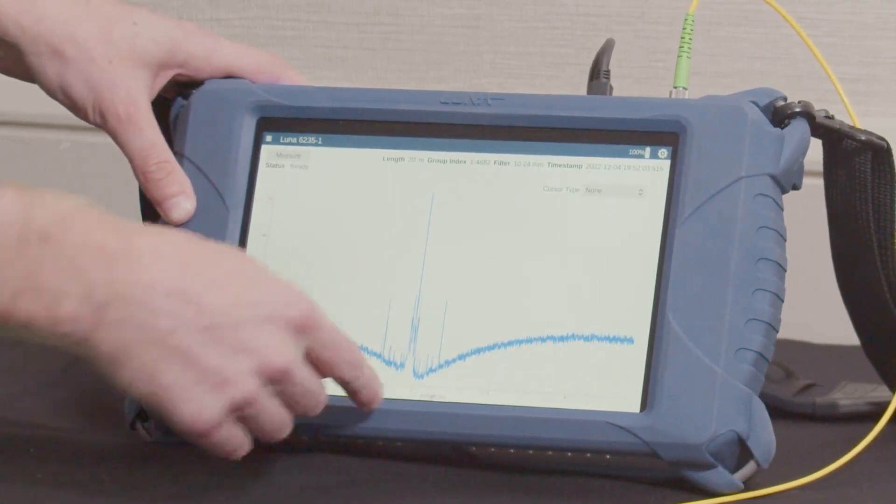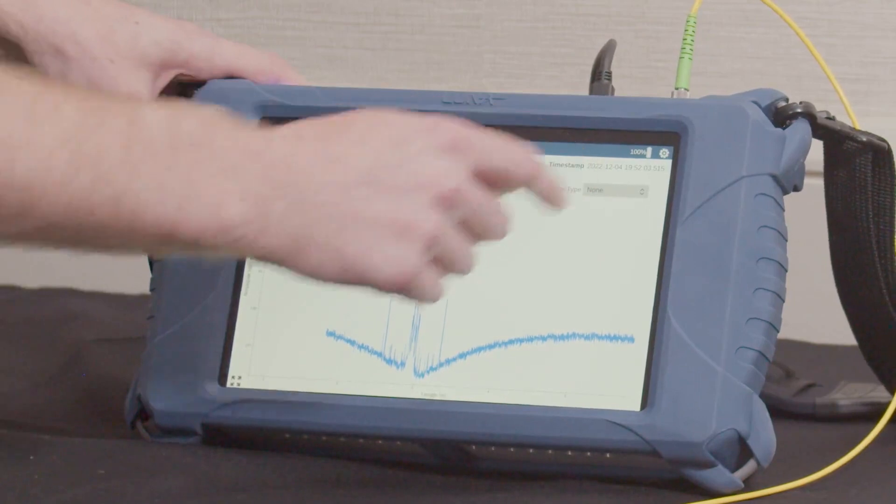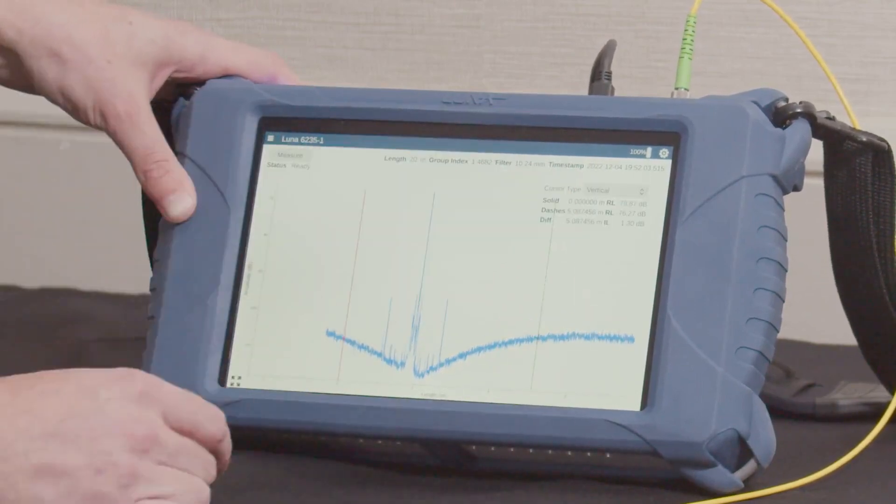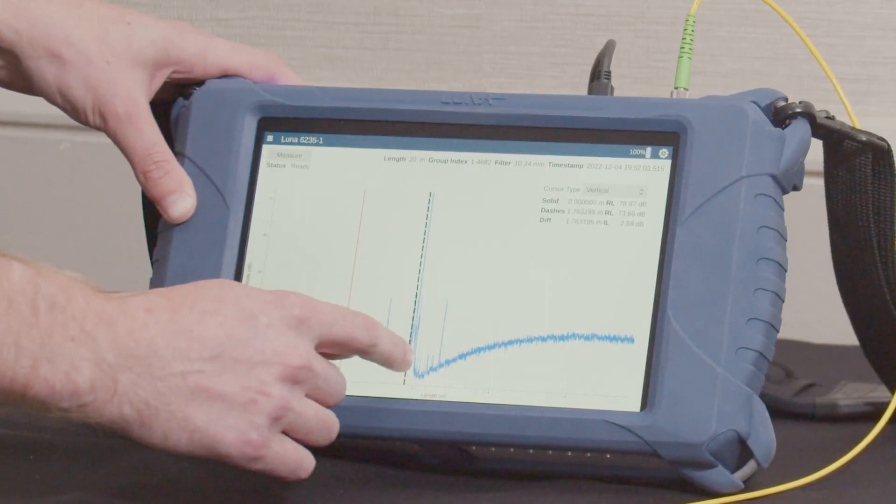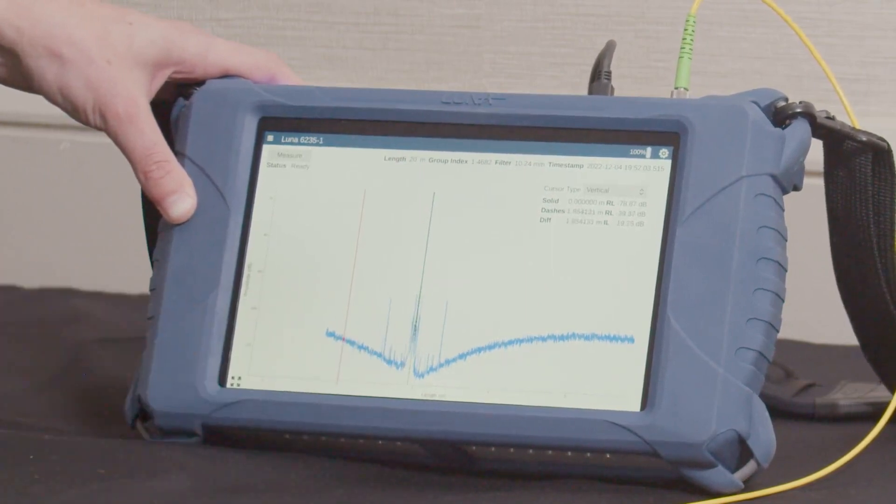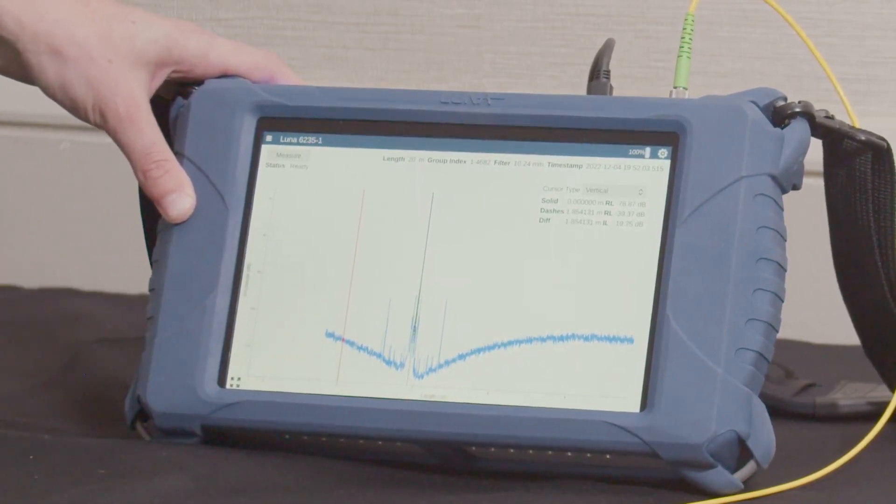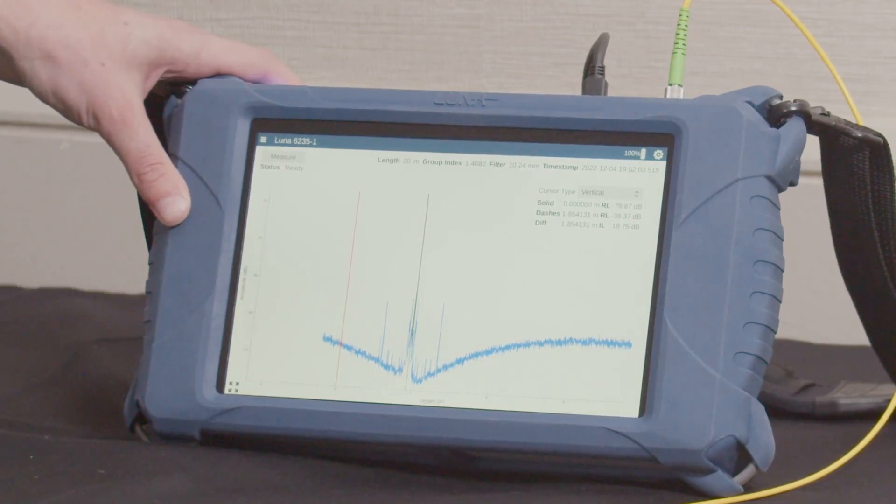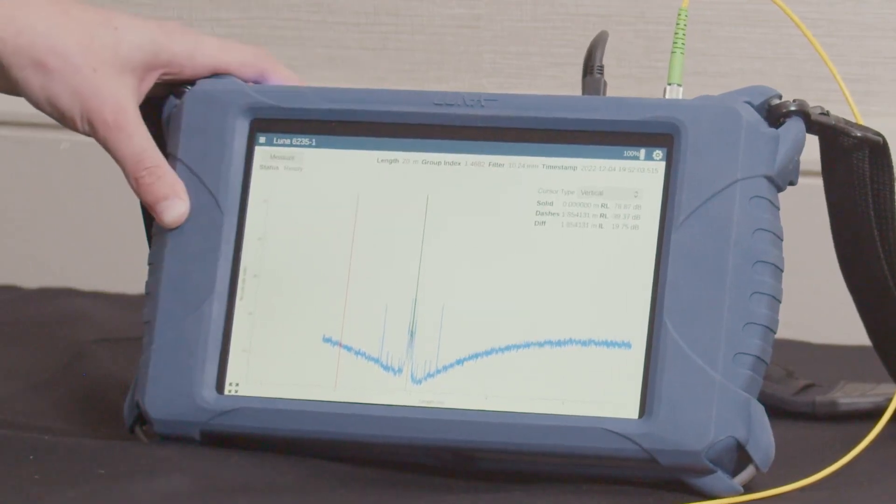And not only can we show you the fact that there is a break, but if we use our cursors, we can actually tell you exactly where that's at to less than a millimeter. So if you move the cursor to your peak, press to snap to the center of that peak, we can look at the location.